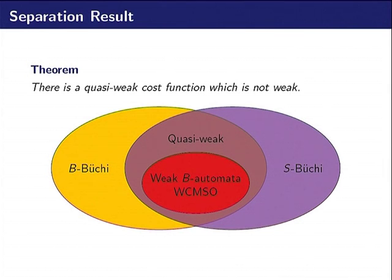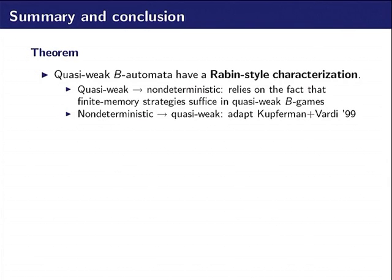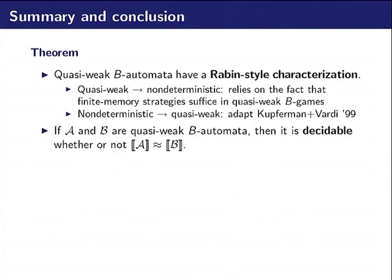So we got this separation of results. To conclude, we showed that it is quasi-weak B automata and not the weak B automata that have Rabin-style characterization.